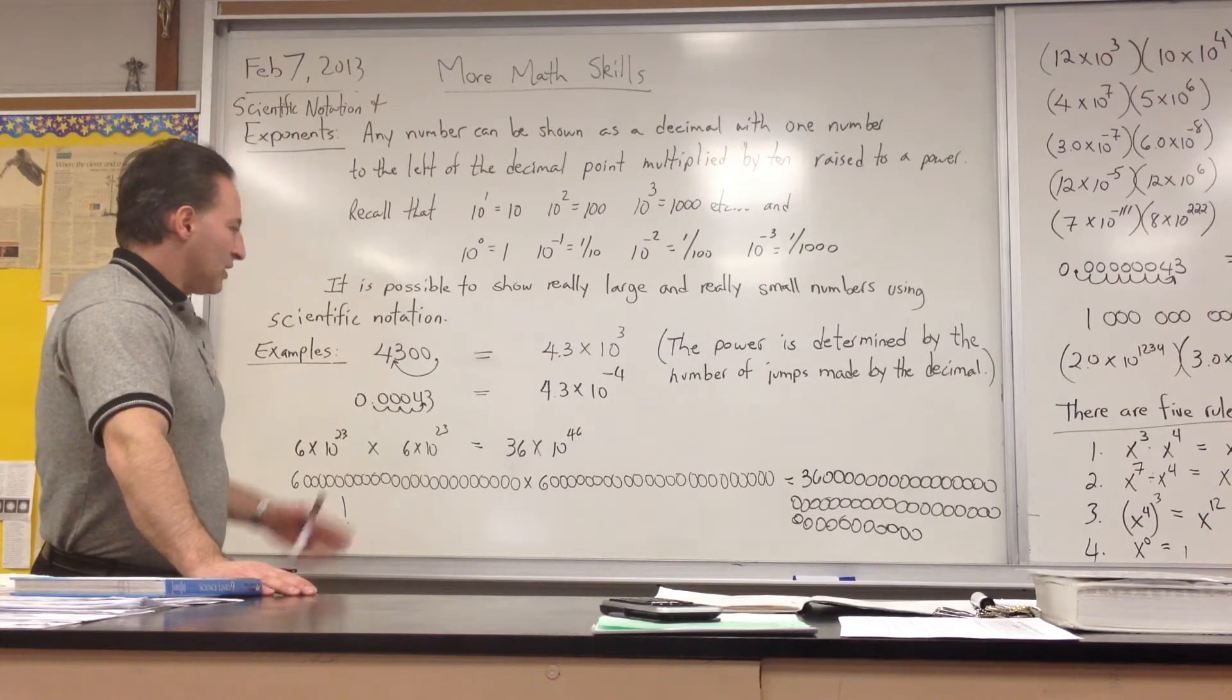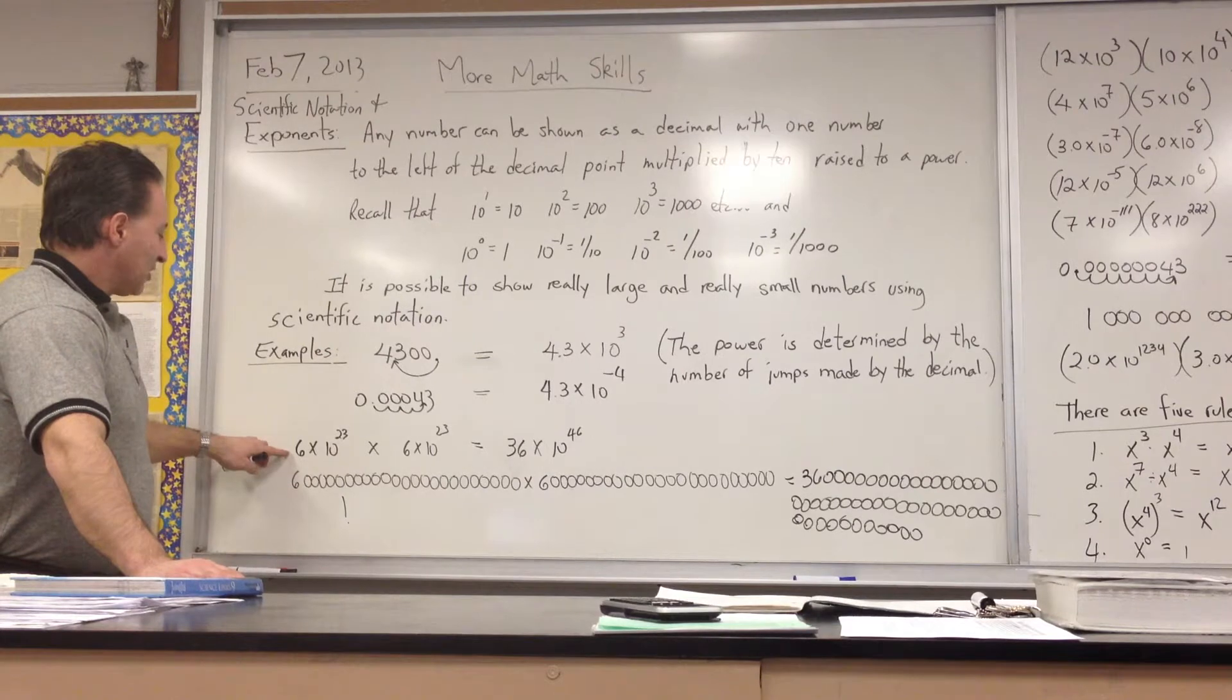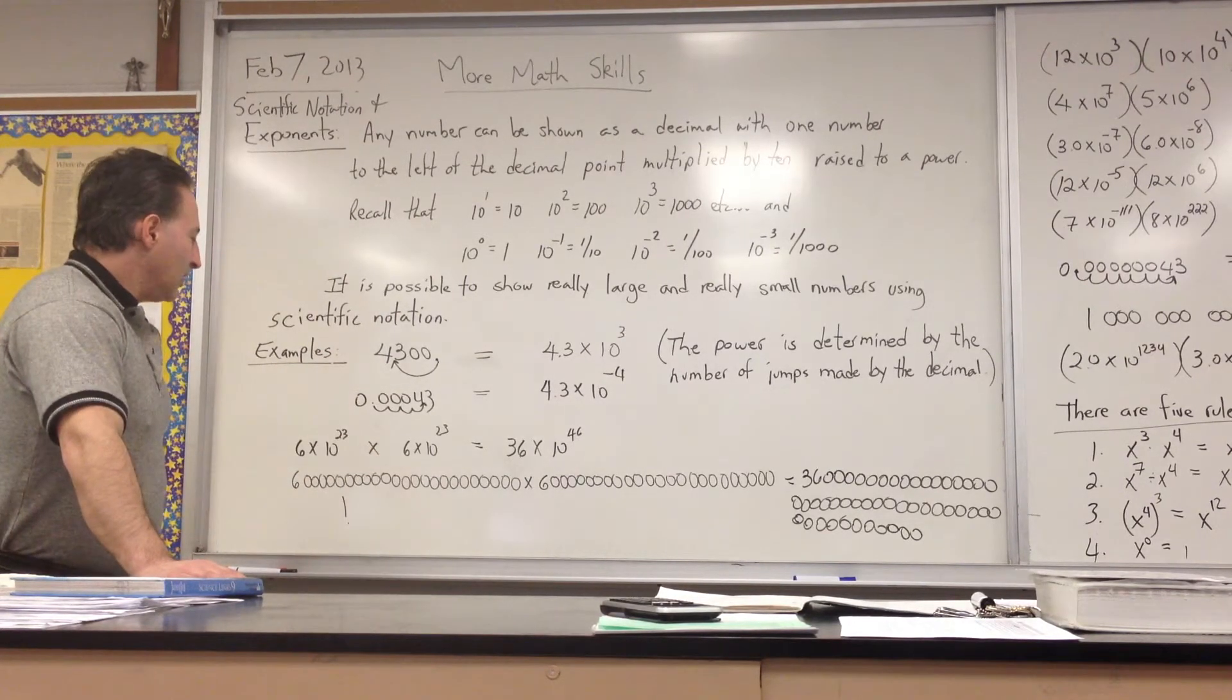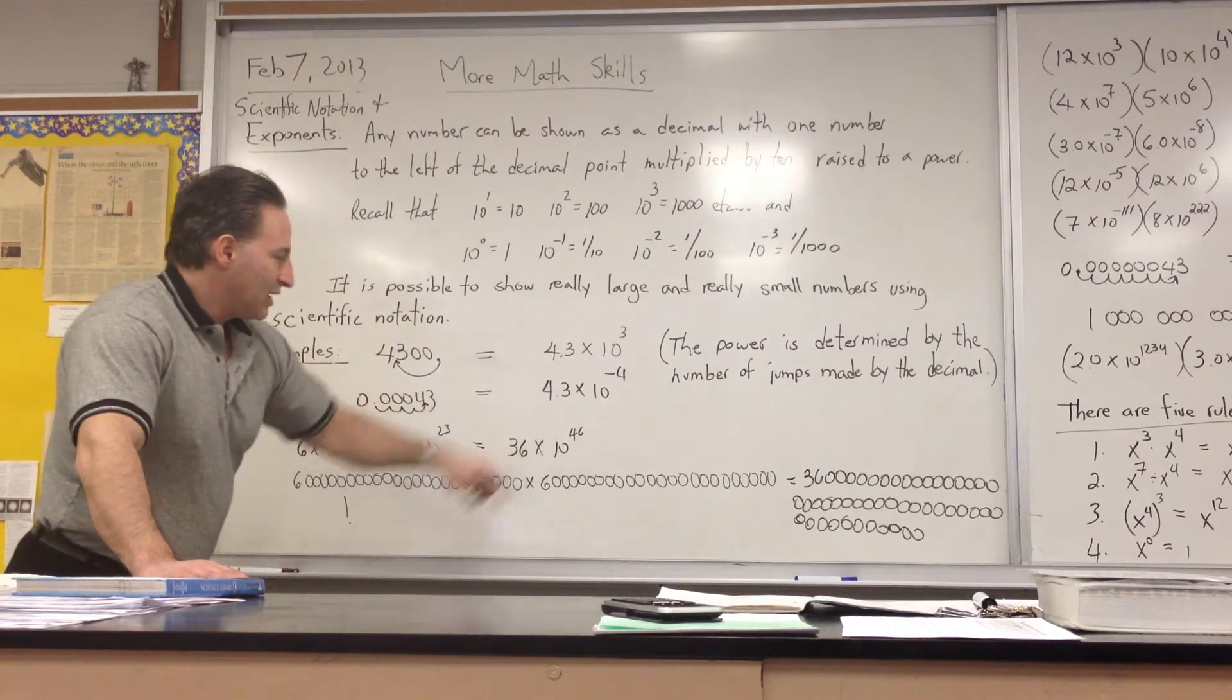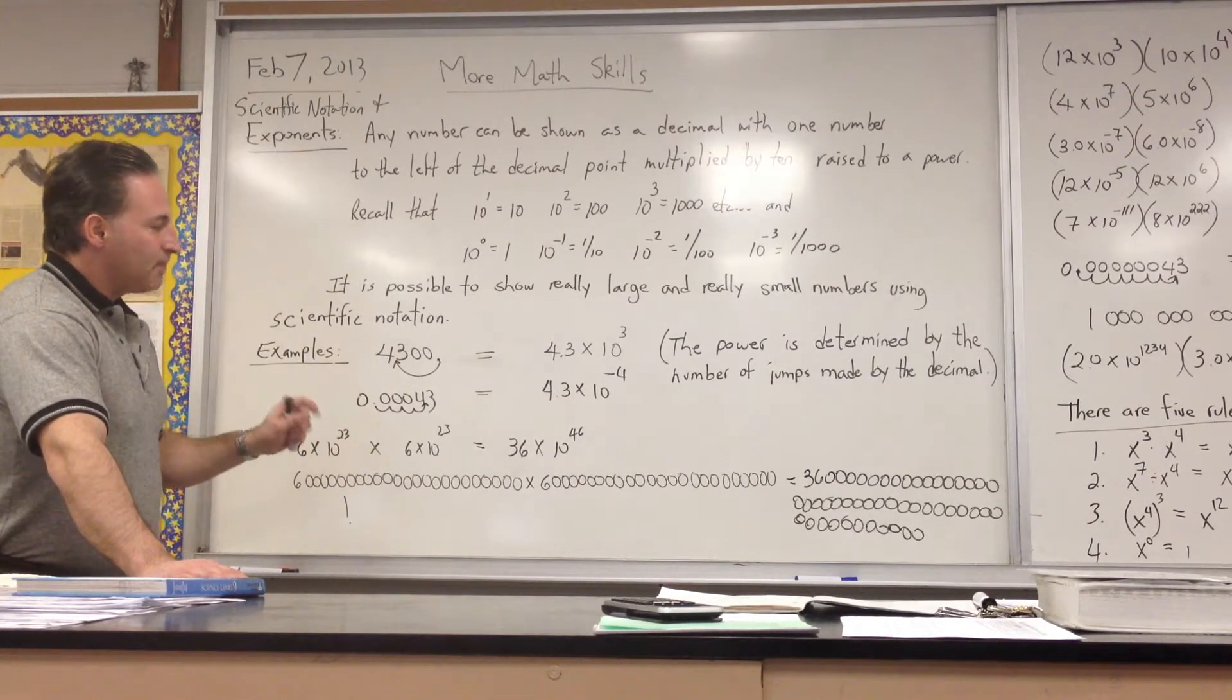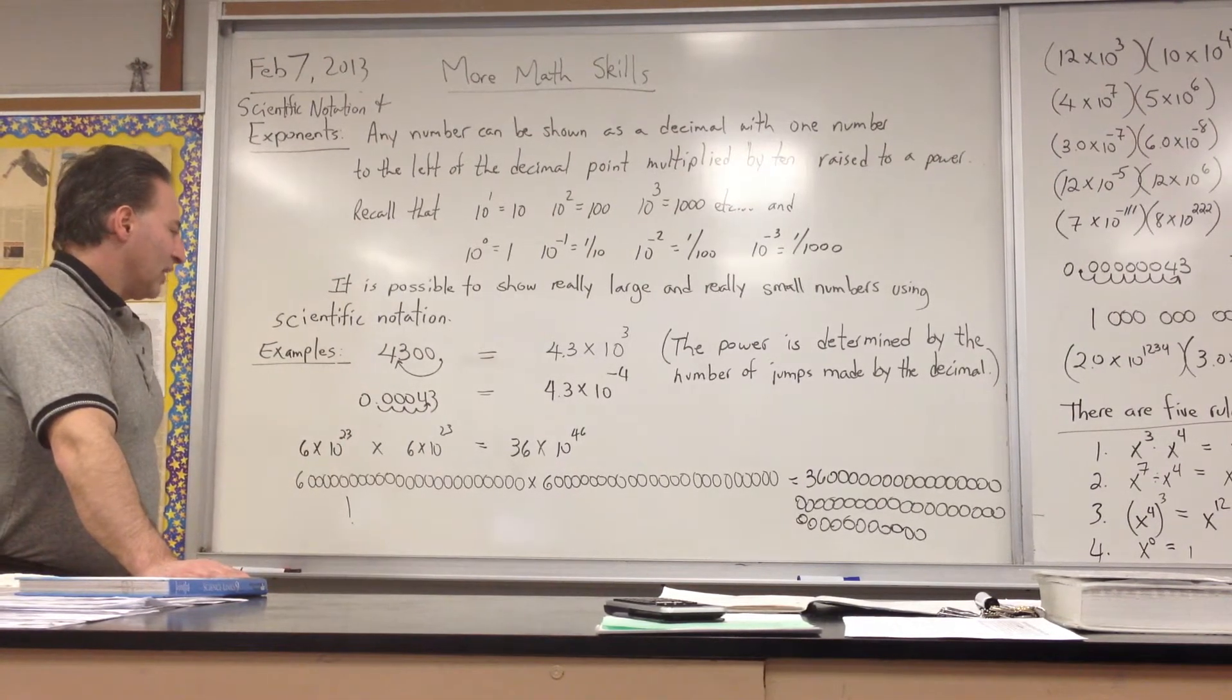So for example, let's show an example where you would use this to prevent having to write huge numbers. If I was to multiply 6 times 10 to the 23 times 6 times 10 to the 23 using scientific notation, 6 times 6 gives you 36, and then you add the exponents so you get 10 to the 46. Whenever you multiply exponents, as long as the base is the same, you simply add the numbers that are used as the exponents to give you the final answer.